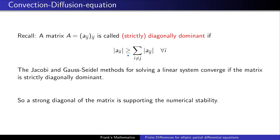I want to recall the definition of strict diagonal dominance: a matrix is called strictly diagonally dominant if the diagonal element is larger than the sum of the remaining elements in its row. If a matrix has this property, one can show that the Jacobi and Gauss-Seidel methods converge. More generally, a strong diagonal supports the numerical stability of the underlying solver.